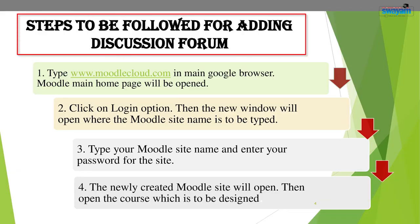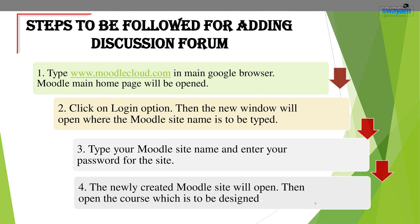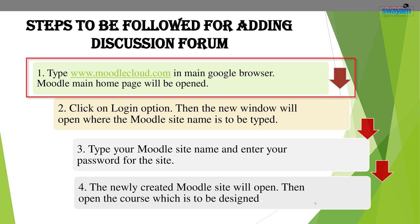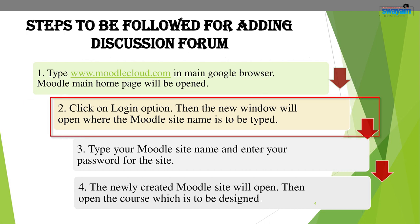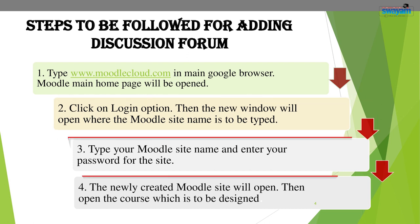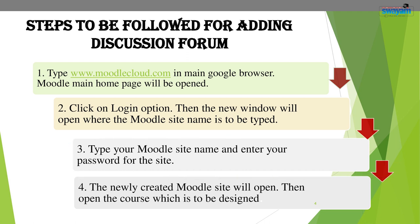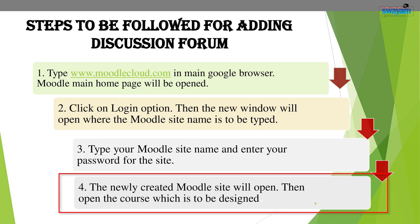Now let us discuss the steps to be followed for adding a discussion forum as the fourth quadrant of the online course. First, type www.moodlecloud.com in the main browser. The Moodle main homepage will open. Then click on the login option. A new window will open where the Moodle site name is to be typed. Type the Moodle site name and enter the password, which is admin by default. The newly created Moodle site will then open.